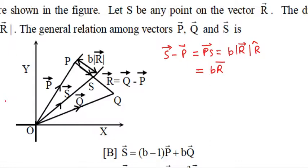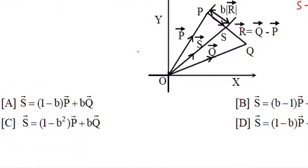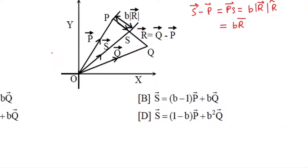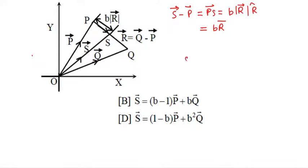So you can write vector S is equal to vector P plus b into vector R. This is vector R.